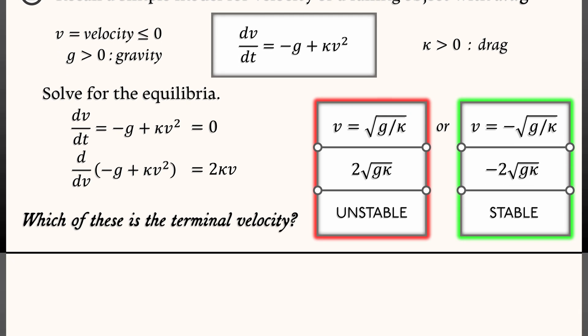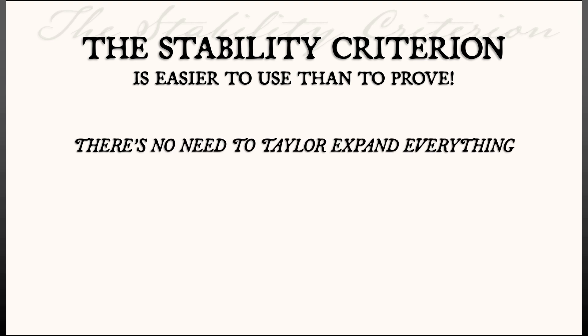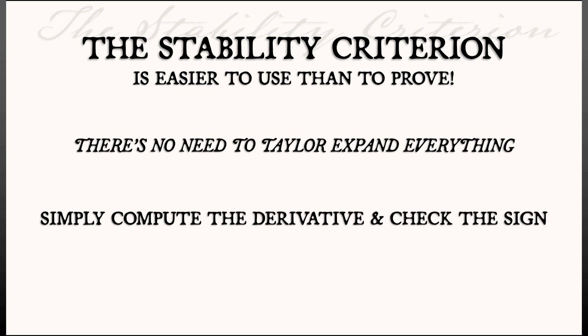What do we see from this? We see that the stability criterion is easy to use. In fact, it's easier to use than to prove. There's no need to do a formal Taylor expansion of everything. Simply compute the derivative, evaluate at the equilibria, check the sign. Positive unstable, negative stable, that's it. That's it for continuous time. What happens in discrete time? That comes next.